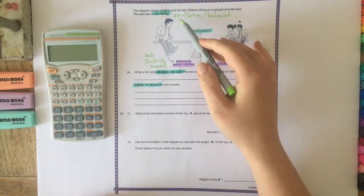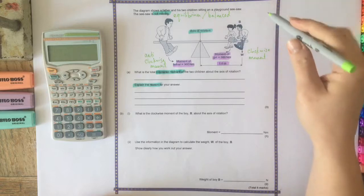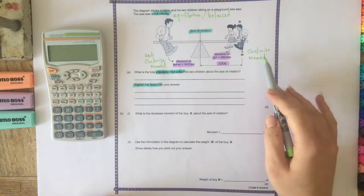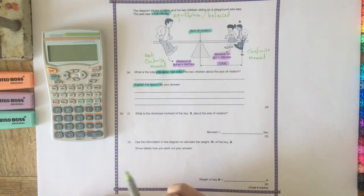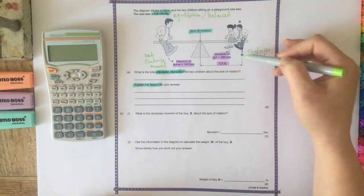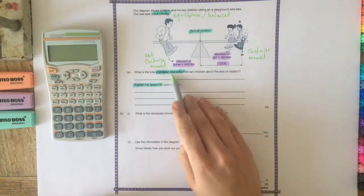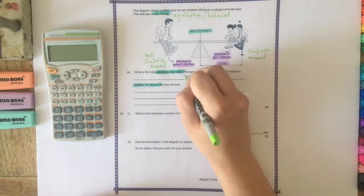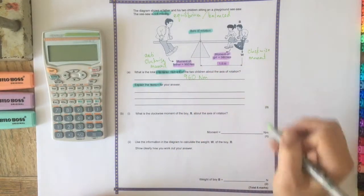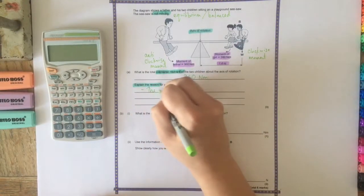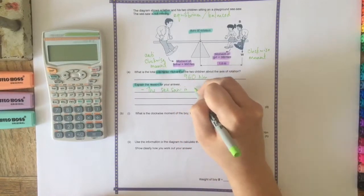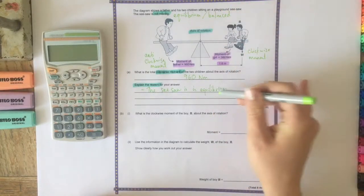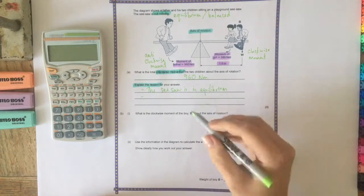And we know that the law of moments is that when something is in equilibrium, the sum of the clockwise moments will equal the sum of the anti-clockwise moments. So therefore the moment of these children together is going to equal the father's moment. So therefore the total clockwise moment of the children is going to be equal to their father, so 960 newton meters. And the reason for this is the seesaw is in equilibrium.